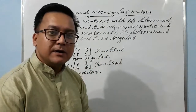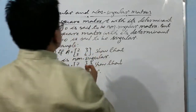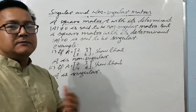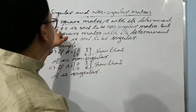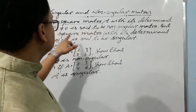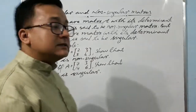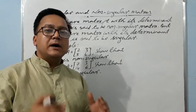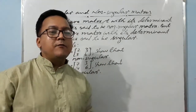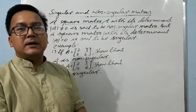Here is a very simple definition. For singular and non-singular, we can only take a square matrix — we cannot take other types of matrices. A square matrix A whose determinant is not equal to zero is said to be a non-singular matrix, but a square matrix whose determinant is equal to zero is said to be singular.